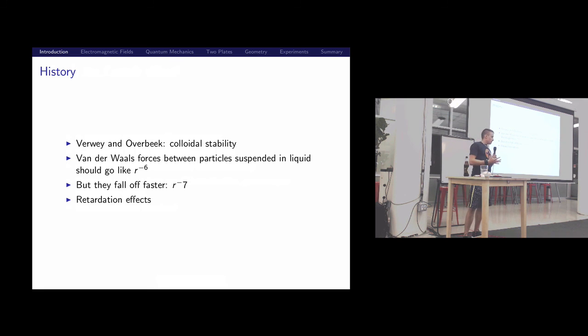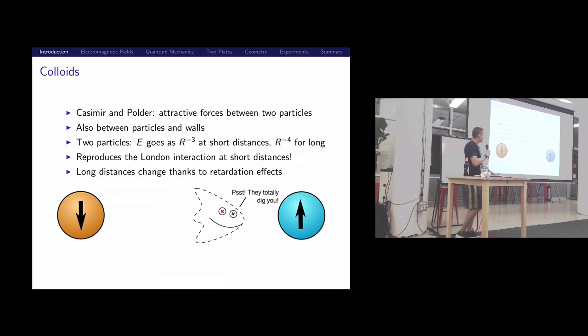So if you double the distance between two particles, the force should fall off as 2, 4, 8, 16, 32, 64 times smaller. But instead, they actually went off 128 times smaller, r to the seventh. This is a big problem. Verwin Oberbeek, and then later Casimir and Polder were trying to account for this difference in forces. They said the experiment doesn't match the data. We might be able to explain it by saying that it takes time for light to propagate between those two.